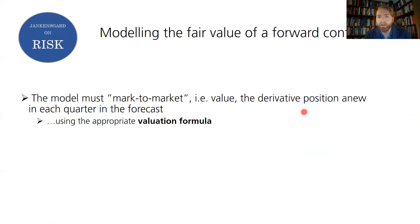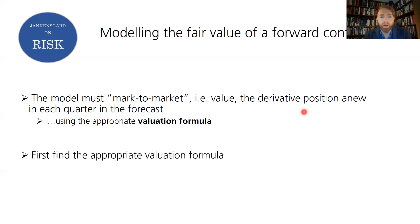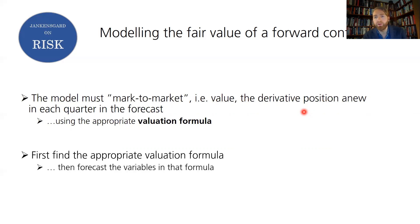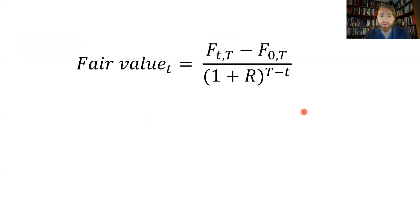To get the model to handle this, we need to instruct it to mark to market — meaning valuing the derivative position at each quarter end in the model's forecast. If we're talking four quarters ahead, at each of those quarter ends we carry out a mark-to-market in the model. We apply whatever we consider to be the right valuation formula for that derivative, run the forecasted inputs through it, and derive an estimated fair value at that future point in time.